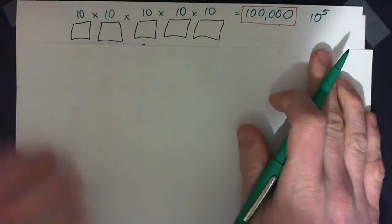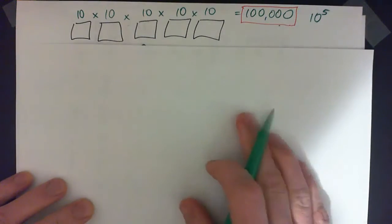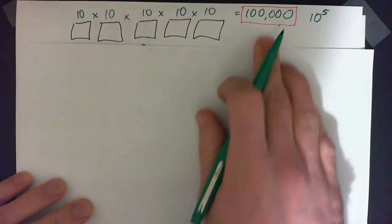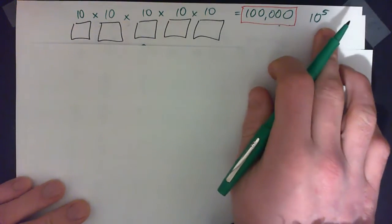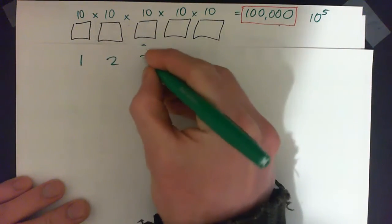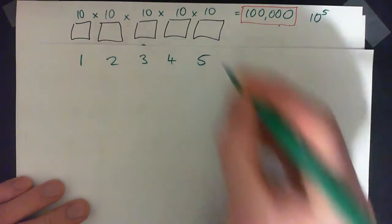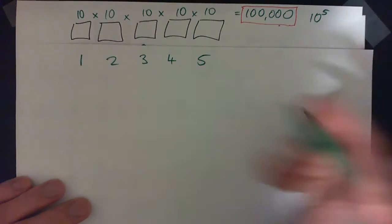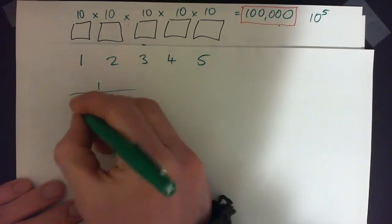Now we've already established and I've shown in previous video that there are 100,000 possible combinations, so the combination of putting a 1 here, a 2 in this place, a 3 here, a 4 here and a 5 here, that's one possibility out of 100,000.